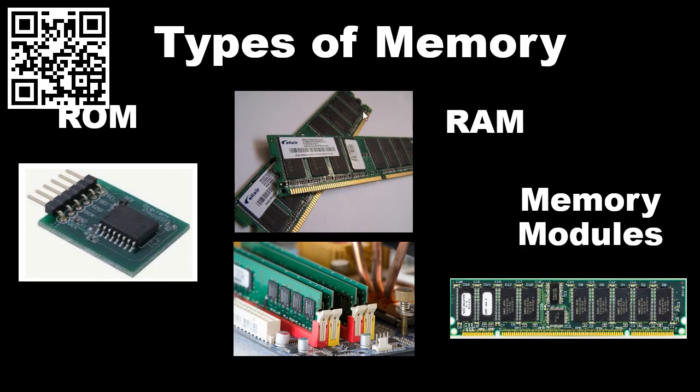Your ROM stores information related to programs and software instructions and performs major input and output tasks. And then your RAM basically stores the data and machine code that's used to support the input and output tasks.